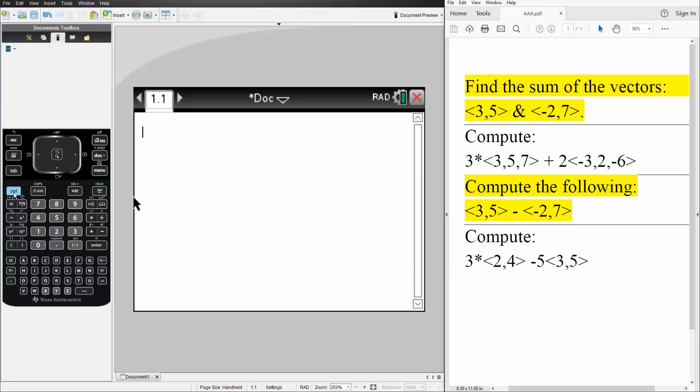What we need to do here is control square bracket. First vector is 3, 5, and we want to add it. So plus square bracket again for the other vector, negative 2, 7. We hit enter, and this is the answer for this first question.